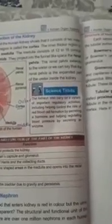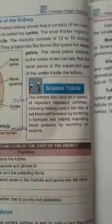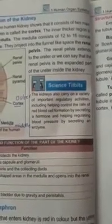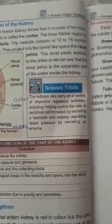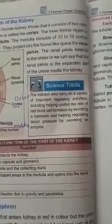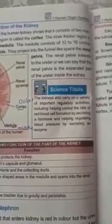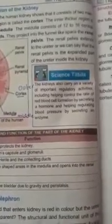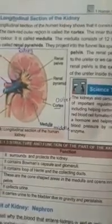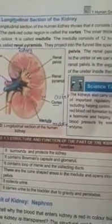Besides purification of blood and production of urine, the kidney also produces hormones throughout the body. The kidney produces hormones called adrenal hormones, whose main function is to control blood pressure inside your body.